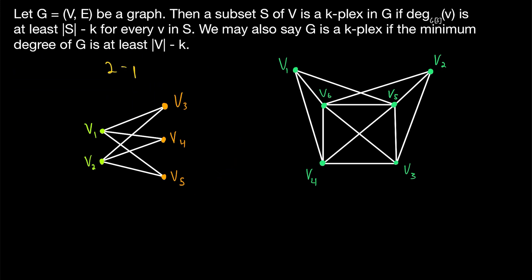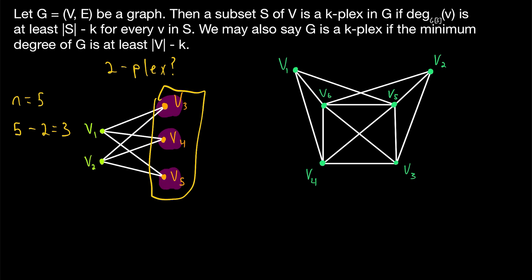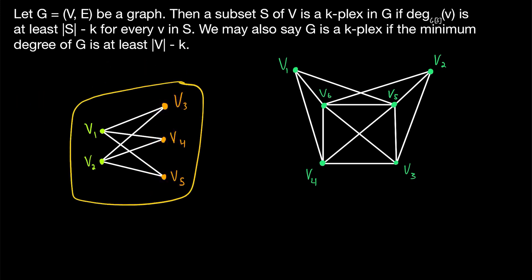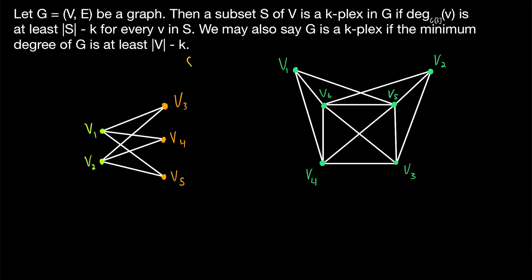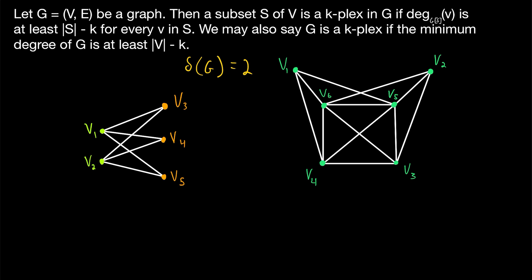So this graph is not a one-plex. How about k equals 2? Is it a two-plex? Again, the order of this graph is 5, so in order to be a two-plex, all of its vertices would need to have a degree of at least 5 minus 2, which is 3. This graph also fails that restriction, because three of the vertices all have a degree of 2, which is less than 3, so it's not a two-plex either. For a graph, we can easily determine for what values of k it is a k-plex just based upon its minimum degree. The minimum degree of this graph is 2, so we might write lowercase delta of g equals 2.